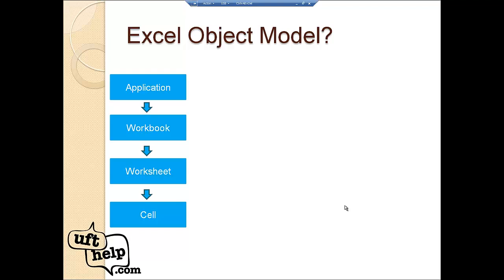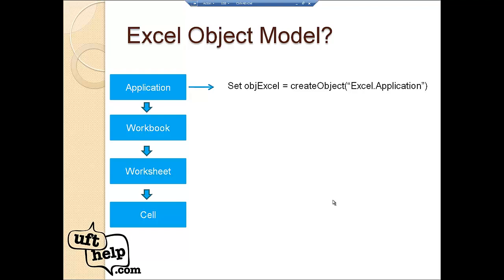We will use this Excel object model in UFT. First, we need to create an object of the application itself — the application refers to the Excel instance. To do that, we will use the Set statement with the CreateObject function, passing the parameter 'Excel.Application'. Now our application object is ready.